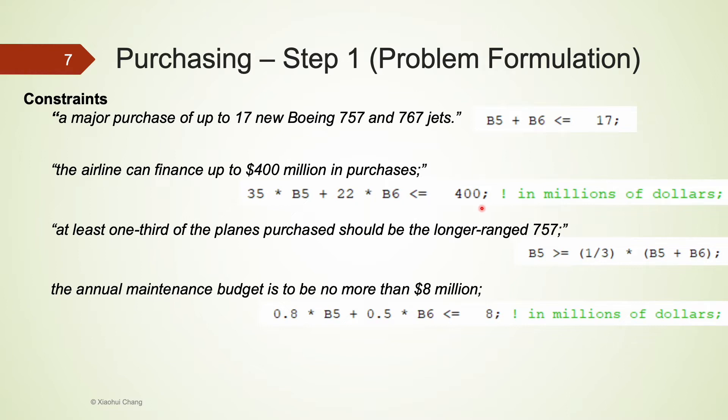Instead of carrying many zeros in this line, I convert everything into millions of dollars. You are welcome to do that, but just be sure that the left-hand side of an equation has the same unit as that of the right-hand side of the equation. We also need at least one-third of the planes purchased should be the longer-range 757. That means if the total number of planes purchased is 9, B5 should be at least more than one-third multiplied by the sum of B5 and B6.